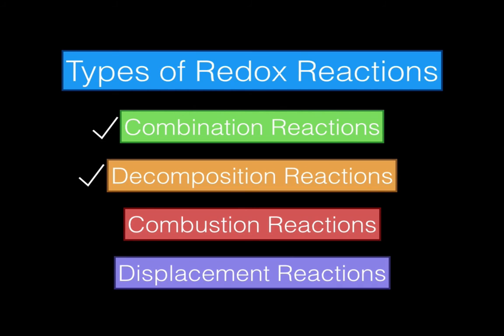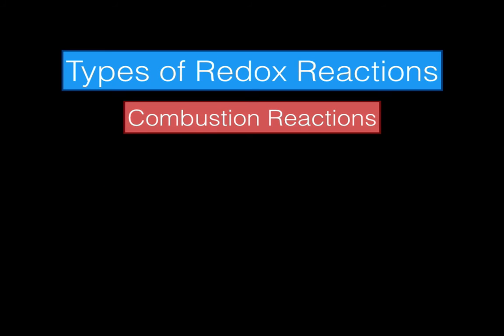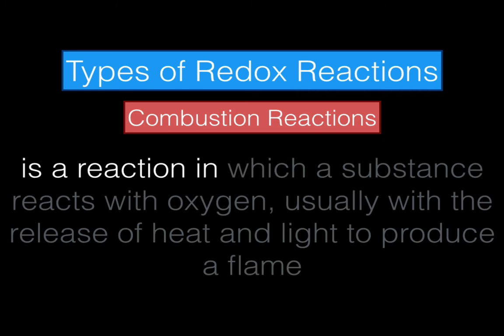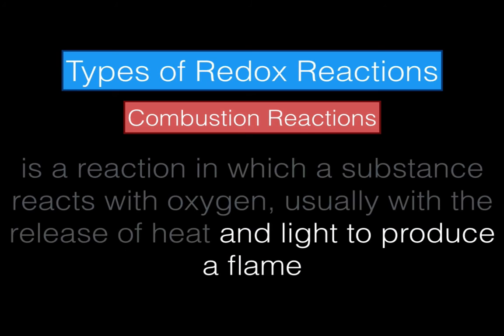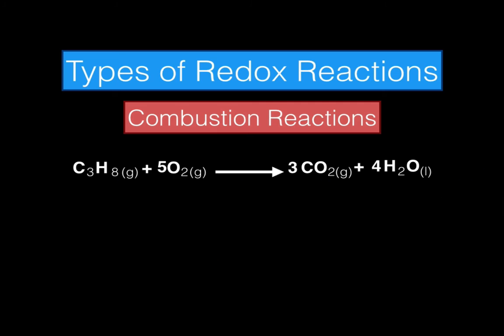We've discussed combination reactions and decomposition reactions; now we'll take a look at combustion reactions. This is a reaction in which a substance reacts with oxygen, usually with the release of heat and light to produce a flame. The key is that oxygen is one of the primary elements used in this combustion reaction, and it produces a flame — any time there's a flame, fire feeds off of oxygen. The more oxygen there is, the more the flame will grow. Typically in these reactions, we have oxygen combining with some sort of compound that has a long carbon skeleton.